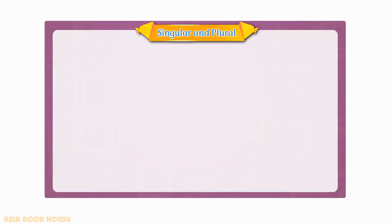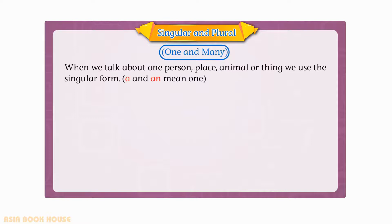Singular and plural. One and many. When we talk about one person, place, animal or thing, we use the singular form.